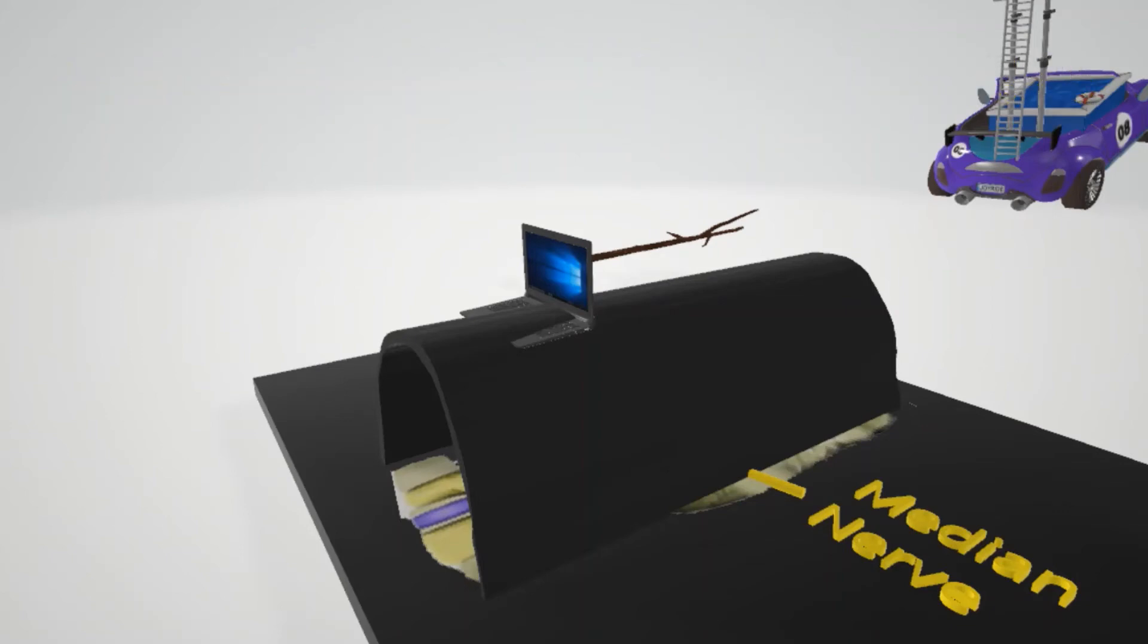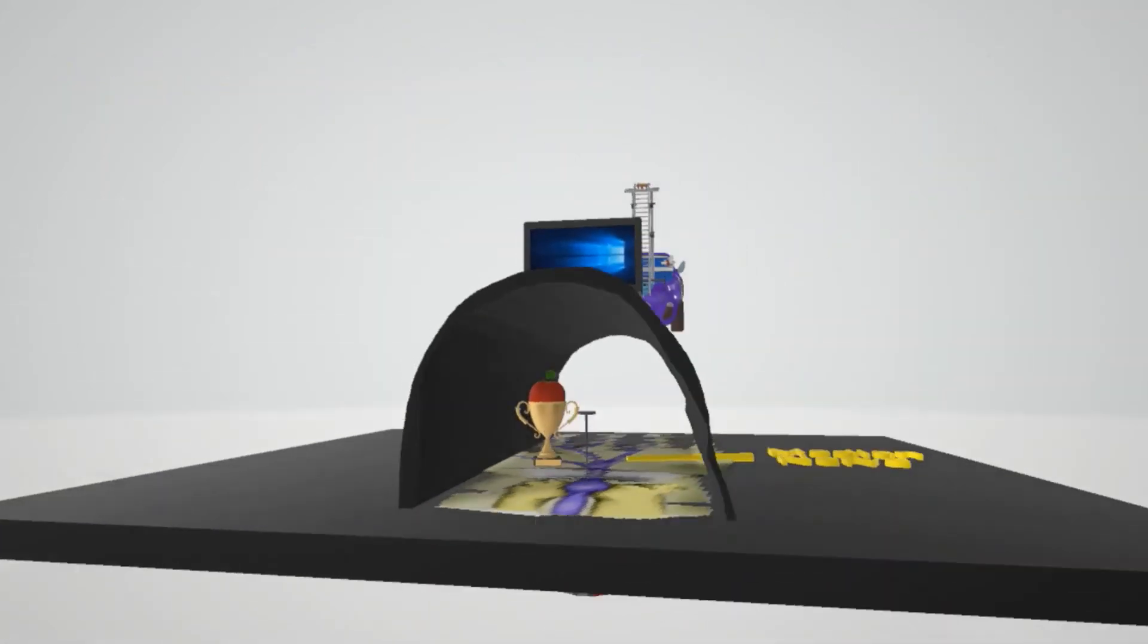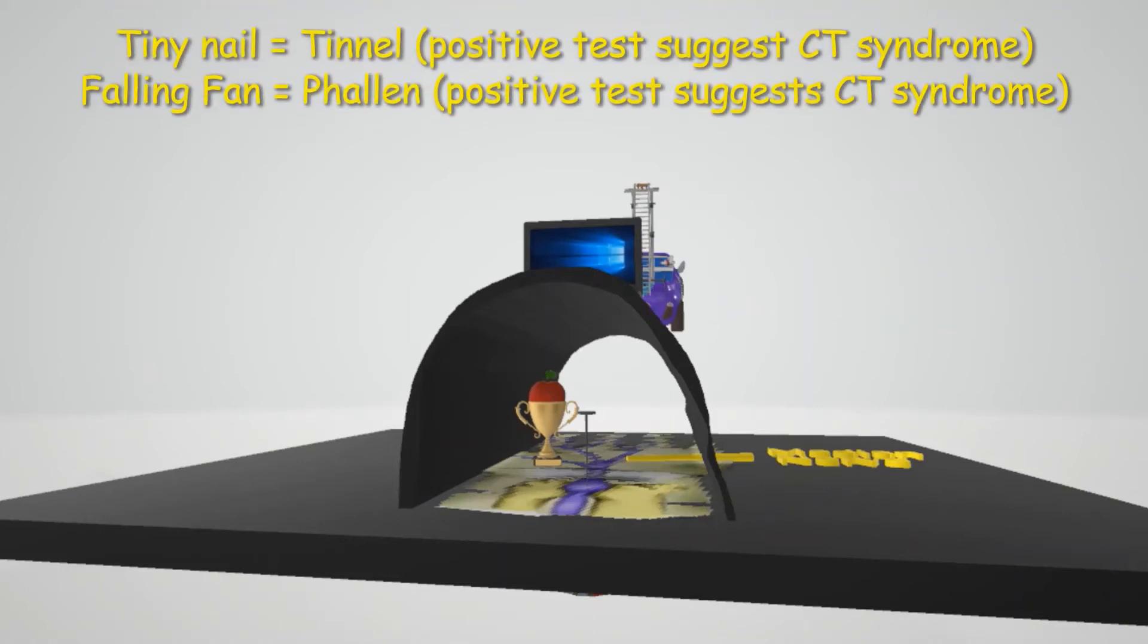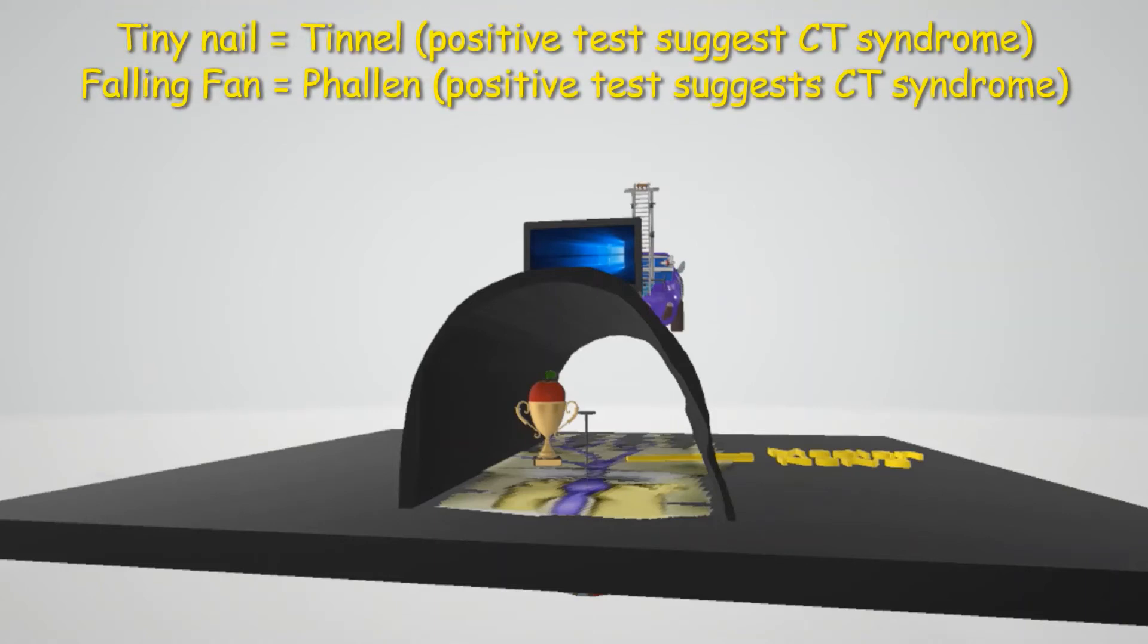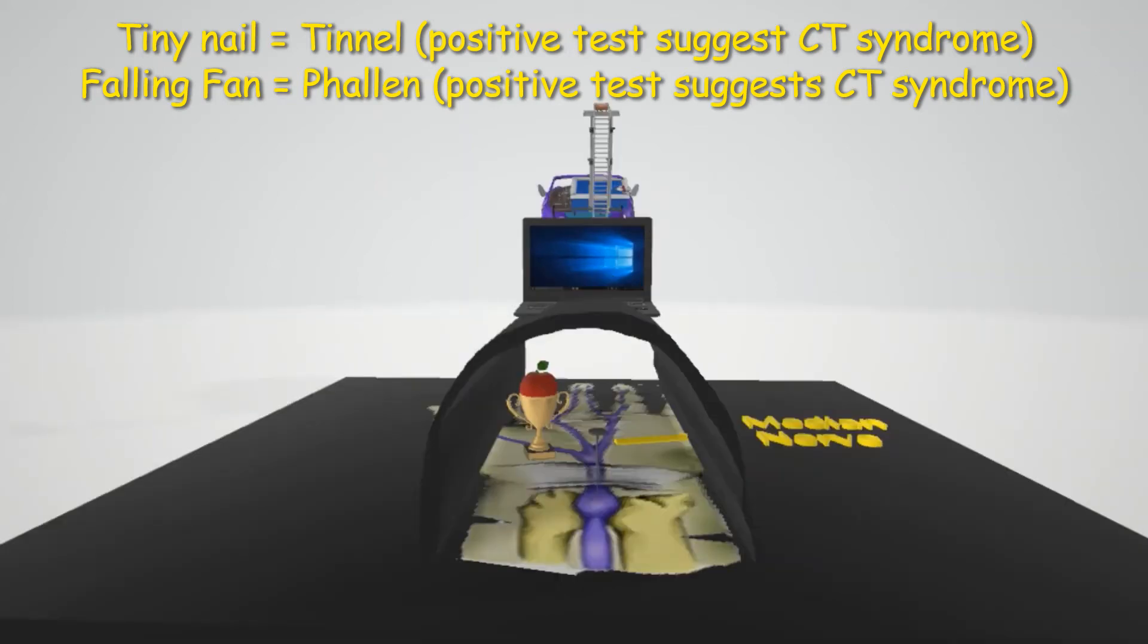Two more things I want to talk about: we see in this tunnel first of all this tiny nail by the wrist. This tiny nail helps remember the Tinel sign. Carpal tunnel syndrome is suggested by a positive Tinel sign, in which there's percussion at the wrist which causes tingling.